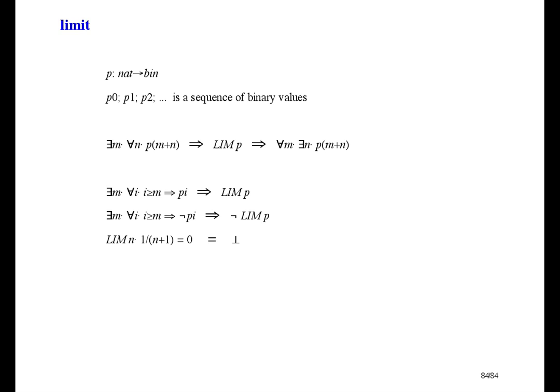Here's my example. The limit of 1 over n plus 1 was 0. But the limit of the binary sequence, 1 over n plus 1 equals 0, is false, because it's false all along.